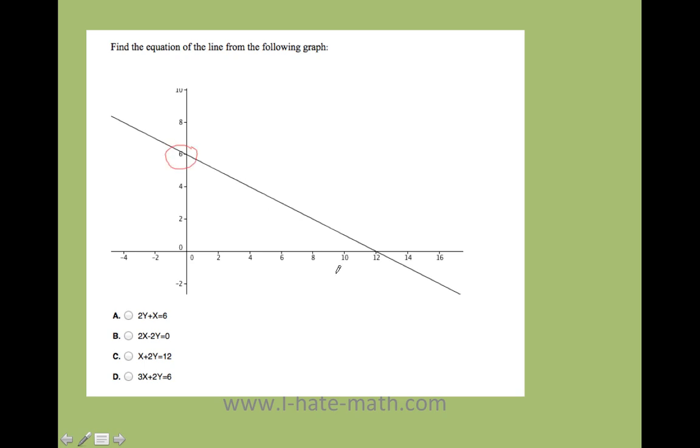And here I have the y-intercept. That means 0 comma 6. And here I have the x-intercept, which is 12 comma 0. Remember, this is going to be x, y, here, x0, y0. Okay, let's go ahead and cheat.